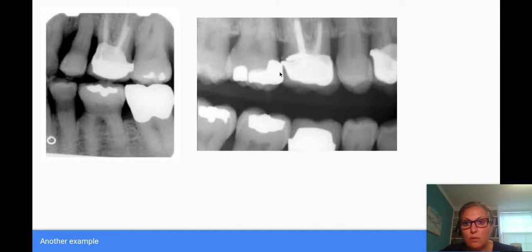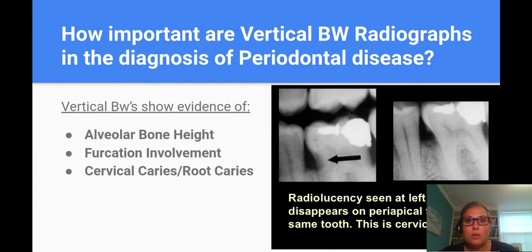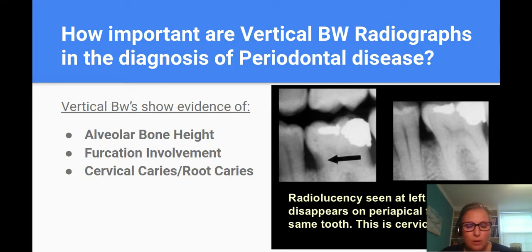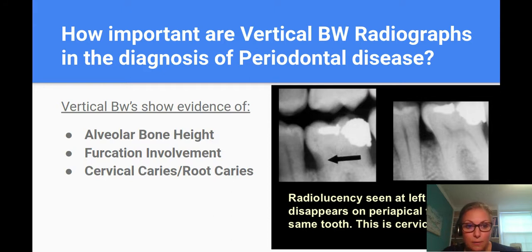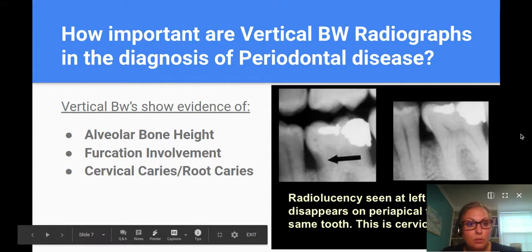The vertical is just so much better, especially with crowns. So how important is a vertical bitewing when diagnosing perio? We know vertical bitewings show evidence of alveolar bone height or lack thereof, furcation involvement — which you rarely can see on a horizontal bitewing — cervical caries, and root caries. A lot of times with vertical bitewings we only think of diagnosing perio, however cervical and root caries especially affect patients undergoing radiation or chemotherapy, patients who have xerostomia, or patients who have had periodontal surgery and are left with some recession.